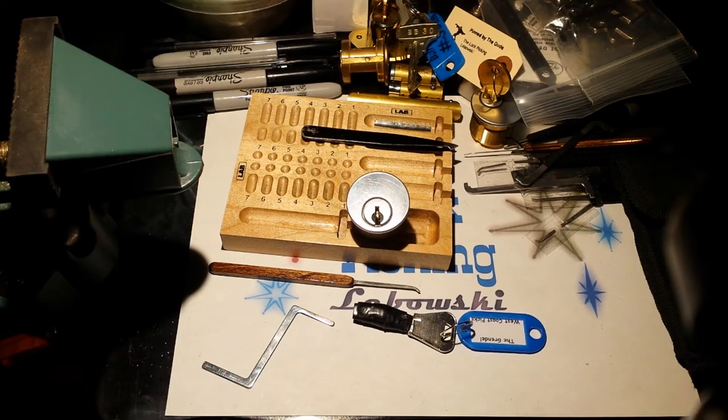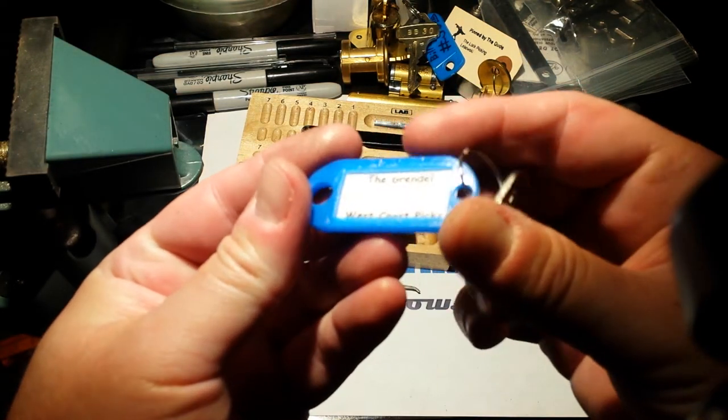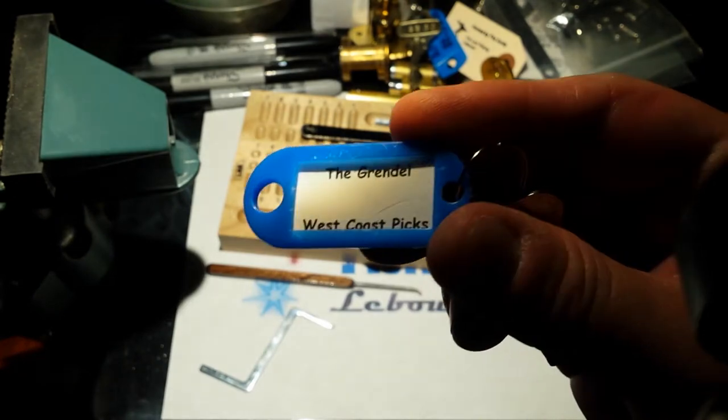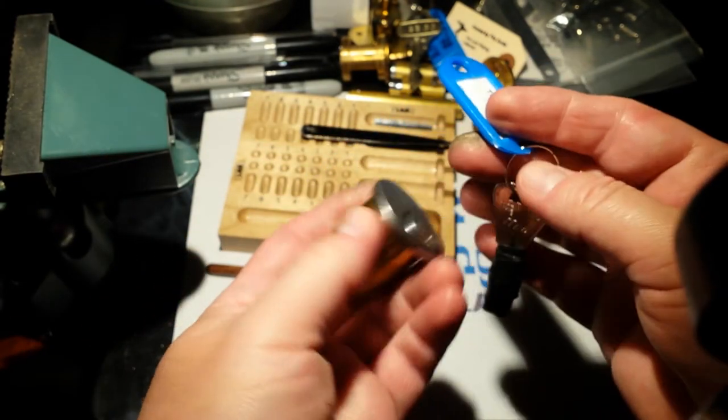Hey, this is Lock Picking Labowski. Up next is a challenge lock pinned by Harley at West Coast Picks. This one's called the Grendel. I think it's a six-pin lock. The key's mummified, so I have no idea what's inside, but let's get started.